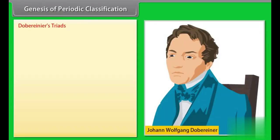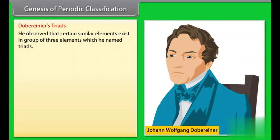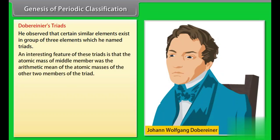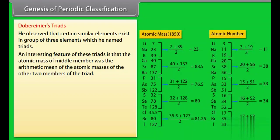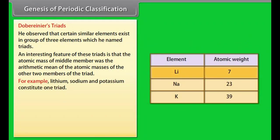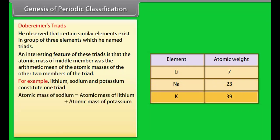Dobereiner's Triads: He observed that certain similar elements exist in groups of three elements, which he named triads. An interesting feature of these triads is that the atomic mass of the middle member was the arithmetic mean of the atomic masses of the other two members. For example, lithium, sodium, and potassium constitute one triad. Atomic mass of sodium = (7 + 39) / 2 = 23.